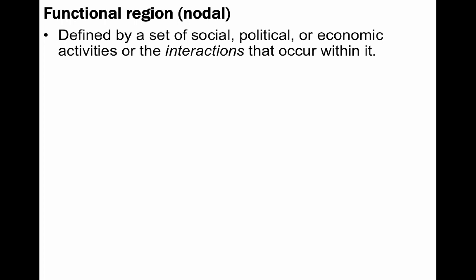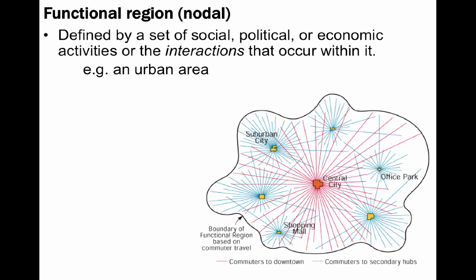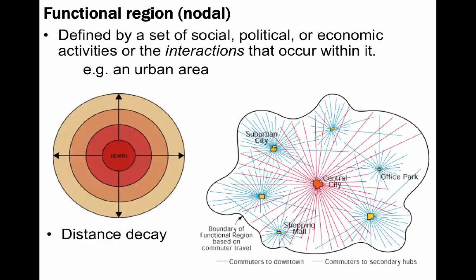A second type of region is functional, or nodal, which is defined by a certain set of activities or interactions within a certain area. The key word to remember with functional region is interaction, and the nature of these interactions can be social, political, economic, or caused by some other influence. The reason why they are sometimes called nodal regions is because they are usually organized around a node, or core area, connected to other external areas. Interaction can often diminish as you move from the core to the outer areas, called the periphery, and this is known as distance decay.